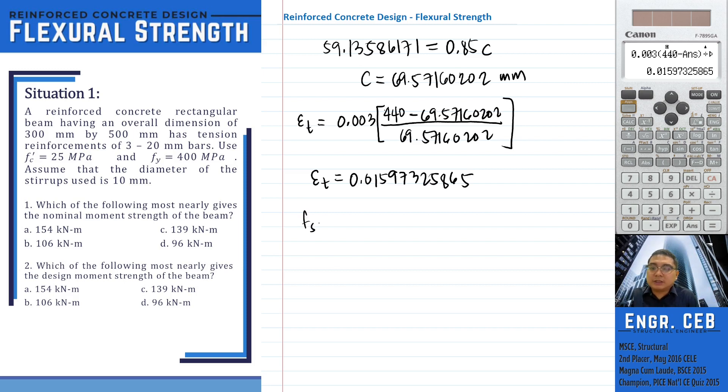From this, we can now compute the corresponding stress in the steel, and that is the strain times the modulus of elasticity. We just have to multiply this by the modulus of elasticity. FS equals 3194 MPa. That is way beyond the yield strength of 400 MPa. Therefore, we confirm that the steel reinforcement yields.